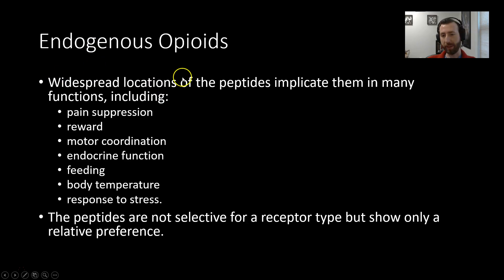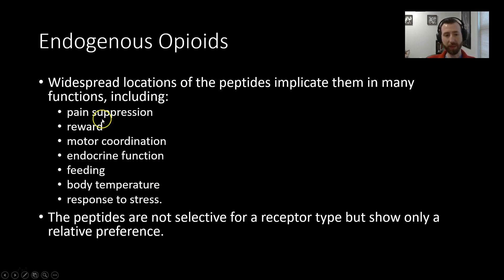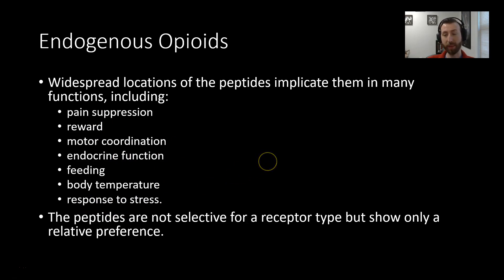There are widespread locations of these peptides, and these implicate them in many functions. This is basically a list of all of the stuff we've talked about previously: pain suppression, reward, motor coordination, endocrine function, feeding, response to stress, et cetera. These endogenous opioid molecules can govern all of these things depending on where they are and what receptors they're binding to.